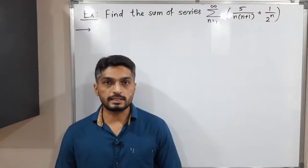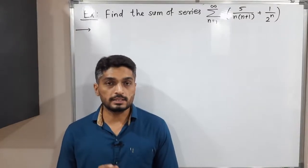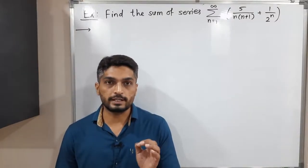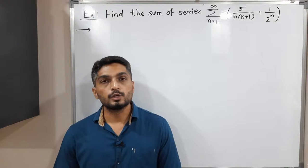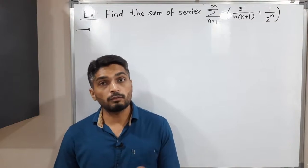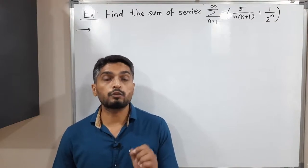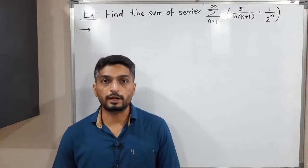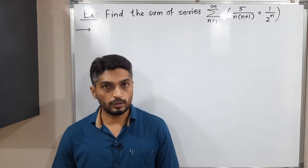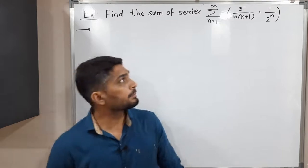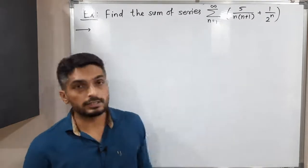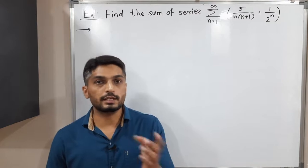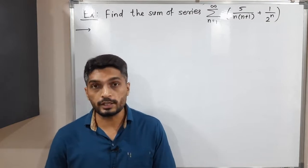Let us discuss this example. We have this series and we have to find its sum. With the help of the algebra of convergent series, we are going to find its sum. That means if addition is there we can take separate summations, and if constants are there you can take them outside.